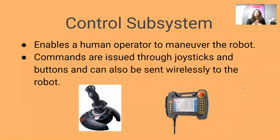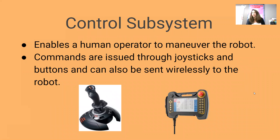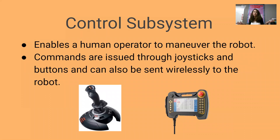Our last subsystem is the control subsystem — it enables the human operator to maneuver the robot. Is it a joystick? Some sort of buttons on a screen? Is it wireless? It really depends on the purpose of your robot and what meets your need. They use a lot of different controls. I think back to that underwater mermaid robot — the deep sea one — and they were using two joysticks to control the hands and could feel what the robot was feeling. It really depends on your reason and purpose for the actual robot.